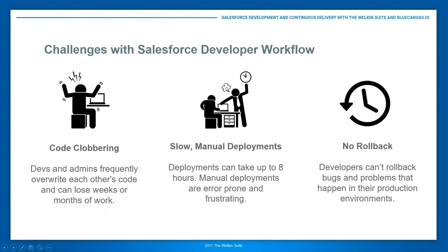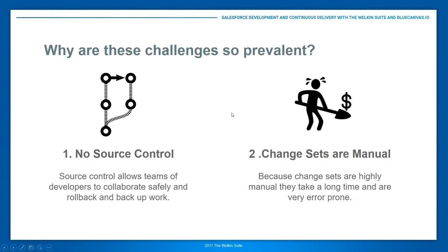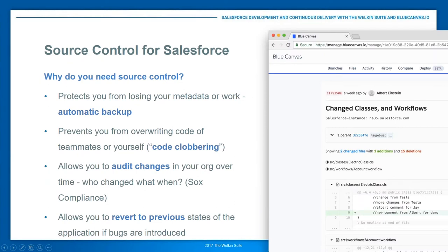Change sets can take some people eight hours to do a deployment and are very error-prone because they're manual. Ant scripts are a bit better but still slow, require maintenance, and are difficult to get into a continuous iteration. And without source control you have no ability to roll back, so if a bug gets introduced you can't revert to a previous state — that's a key challenge everyone is probably familiar with.